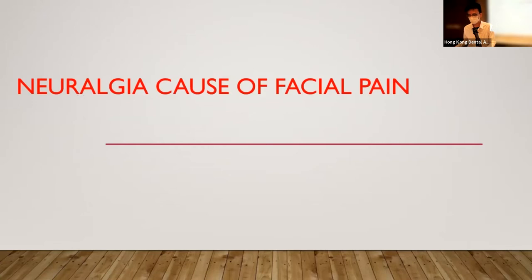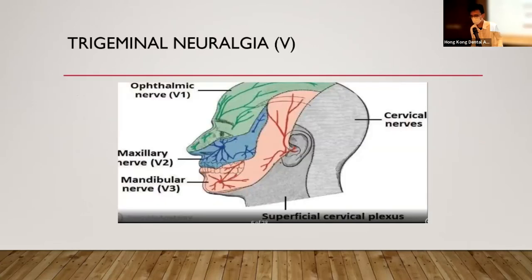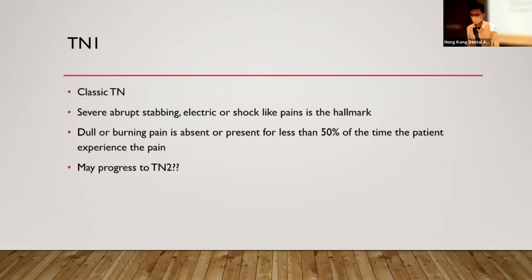For neuralgia causes of pain, the trigeminal fifth nerve has three main branches: the ophthalmic branch, the maxillary branch, and the mandibular branch. Trigeminal neuralgia is divided into two types. Type 1 presents as a shock-like, electric, abrupt-shooting kind of pain — the hallmark of type 1 — where dull or burning pain is absent or present less than 50% of the time.